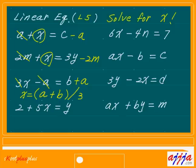How about this one? Then plus 2, minus 2 here. So x equals y minus 2 in parentheses, then divide by — scratch this one — 5. That's it.